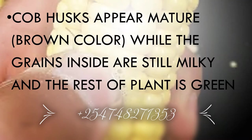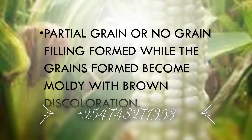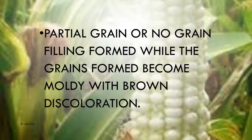The plant's cob appears mature and brown in color while the grains inside are still milky, and the rest of the plant is green. You can see from the background — it is milky though the other part of the plant was dry. There is partial or no grain filling, and the grain that does form becomes moldy with brown discoloration. The maize doesn't have many grains, or the grains don't form the right pattern — so you'll find gaps on the maize cob.